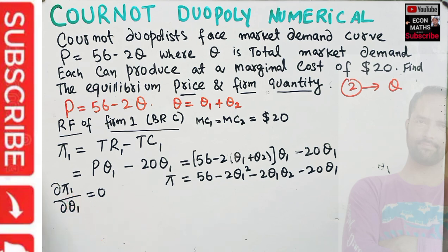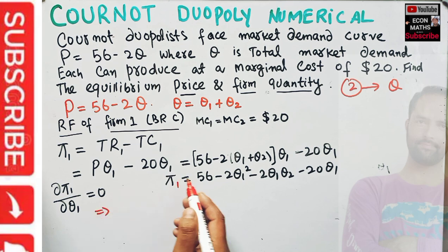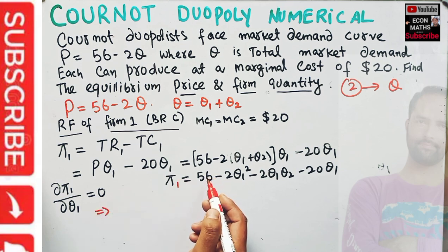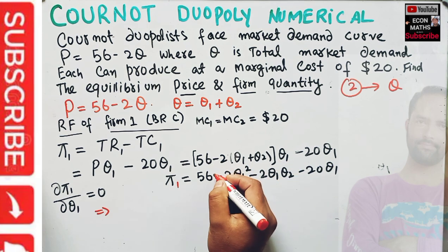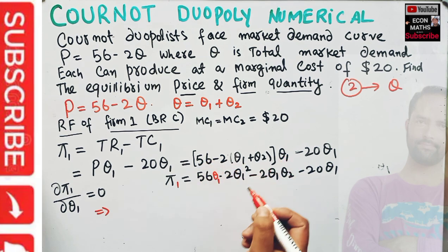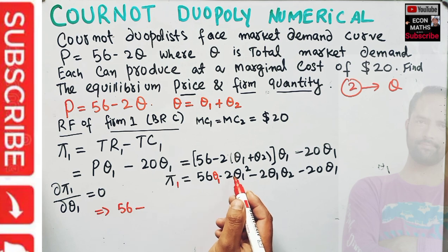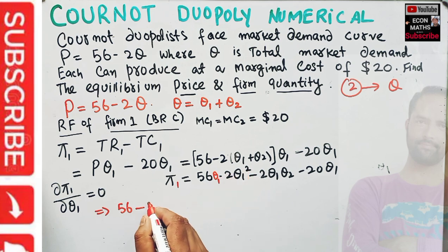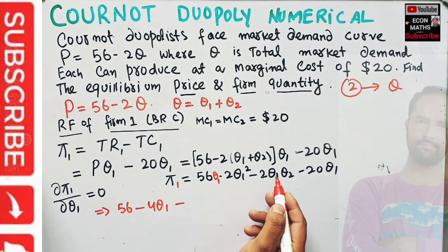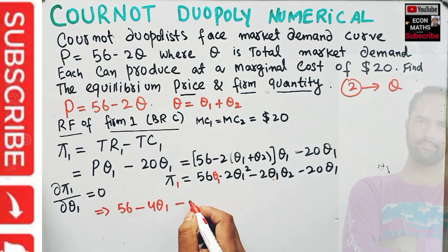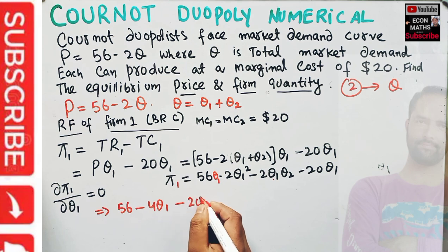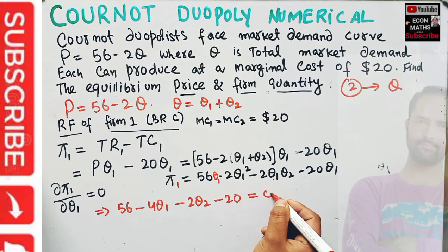Taking the derivative with respect to Q1 and setting it equal to zero: the derivative of 56·Q1 is 56, the derivative of 2·Q1² is 4·Q1, the derivative of 2·Q1·Q2 with respect to Q1 is 2·Q2, and the derivative of 20·Q1 is 20. Setting this equal to zero gives: 56 - 4·Q1 - 2·Q2 - 20 = 0.